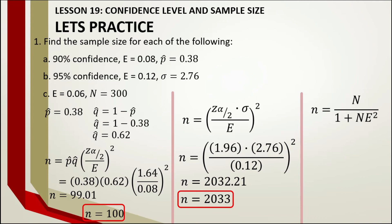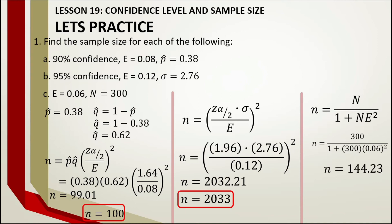For the third practice problem, we use Slovin's formula because the only given values are total population and margin of error. The population N is 300 and the margin of error is 0.06. Substituting into the formula, the answer is 144.23, which rounds up to 145.